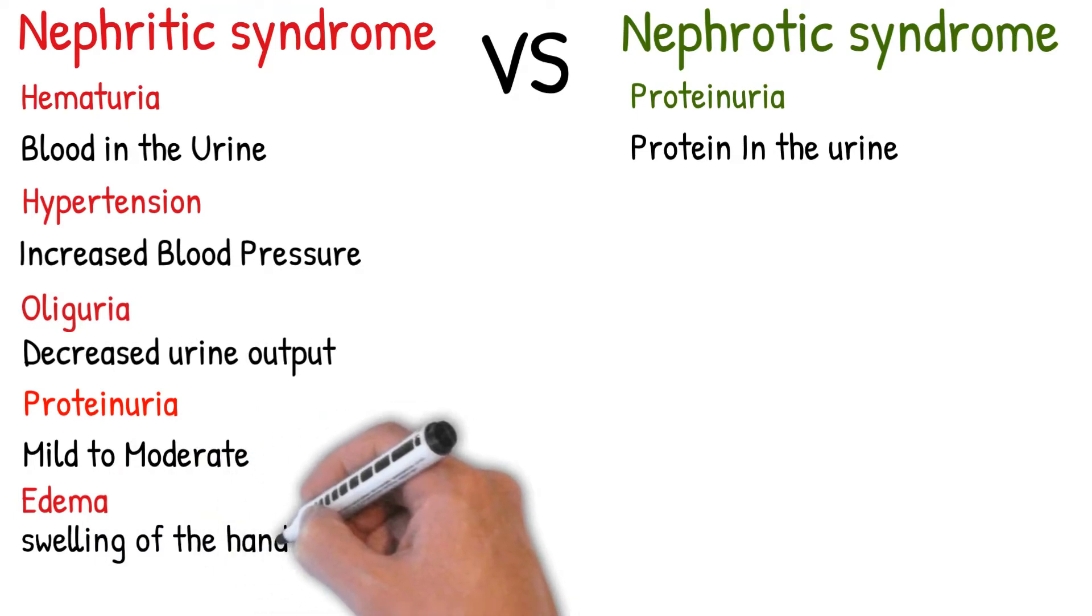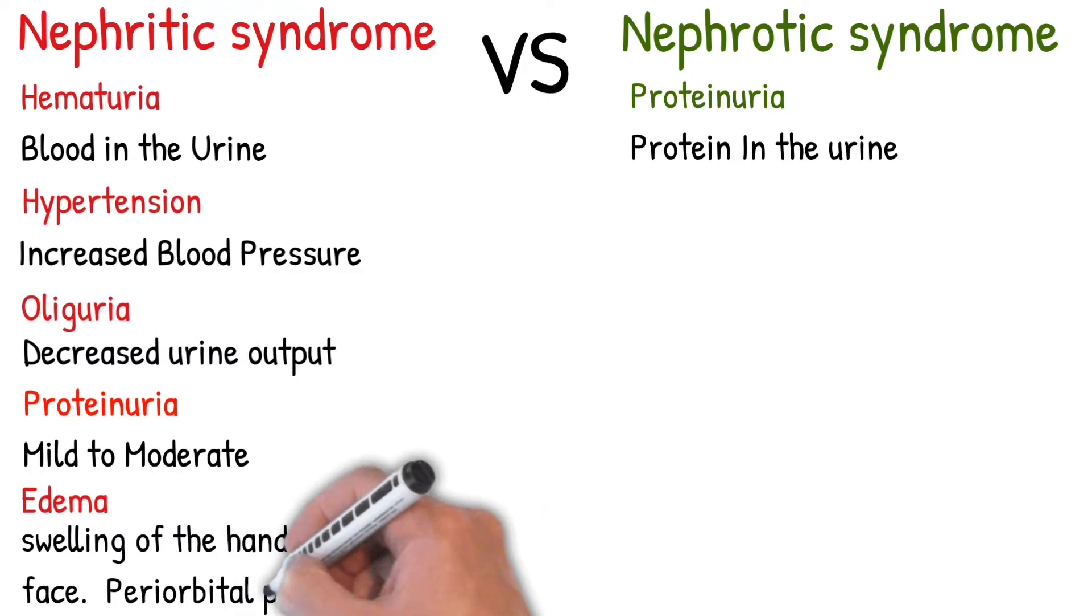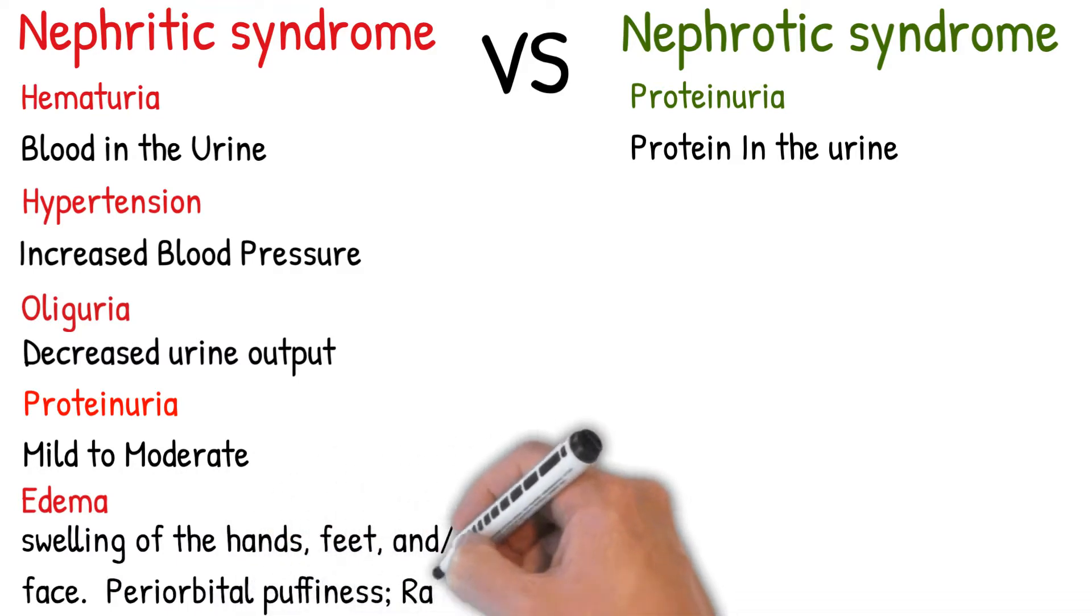Periorbital puffiness caused by salt retention. Sodium retention increases plasma hydrostatic pressure. Diffuse rales or crackles may be heard at bilateral lungs.